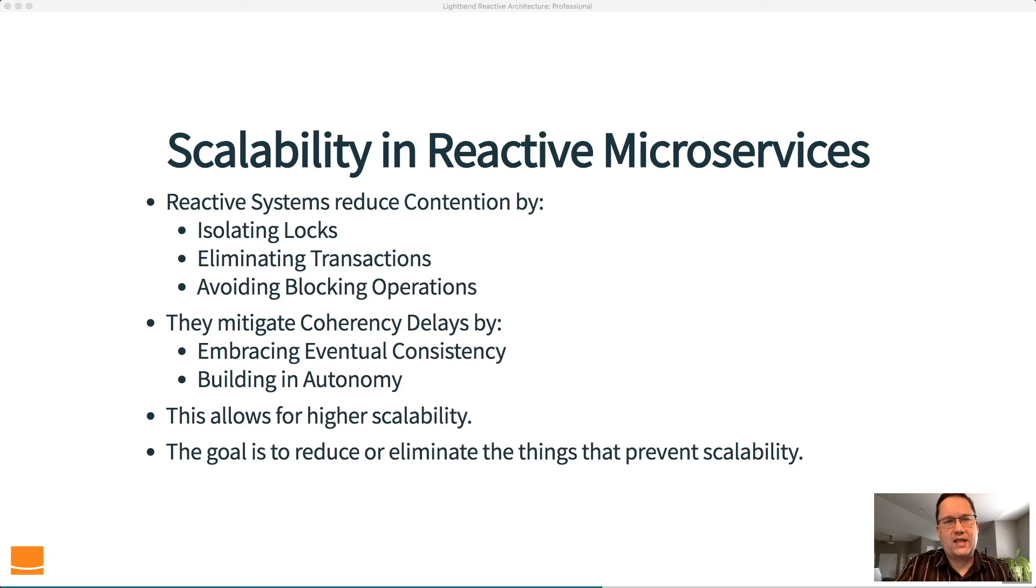So how do we do that? Well, reactive systems are going to try to reduce contention. And they're going to do that by isolating locks. If you have a large lock, then that creates a lot of contention. But an isolated lock creates less contention. If we can eliminate the lock completely, even better. We eliminate transactions. If we can eliminate transactions, that's one way that we can reduce contention on our database.